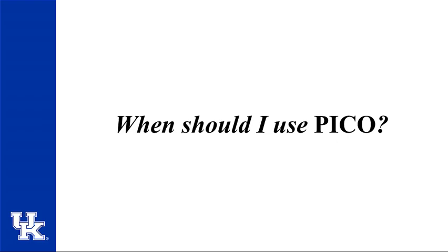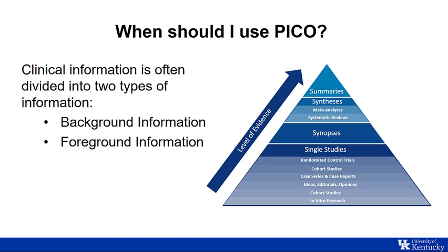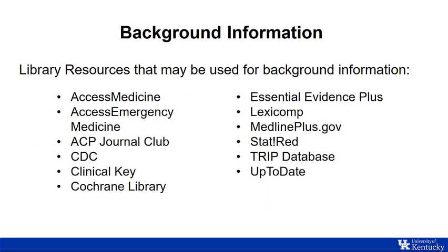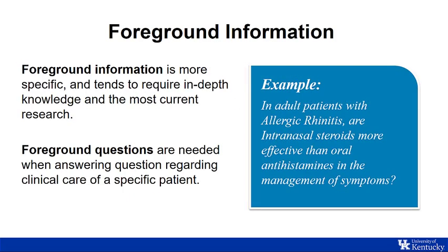You may be wondering when you should use PICO. There are two major types of information: background information and foreground information. Background information is well accepted and consistent. Background questions are needed when searching for general information. They usually require answering who, what, where, why, and how a disorder, test, or treatment may be working or may not work. Often these questions can be best answered by using a textbook or consulting a clinical database. An example would be: What are the symptoms of gastroparesis? These library resources may be useful in finding background information.